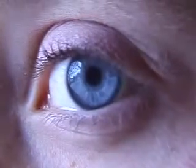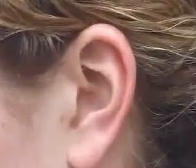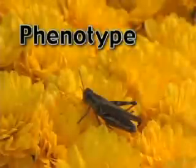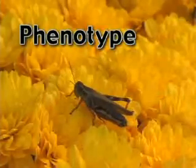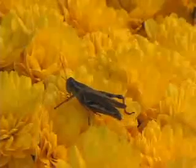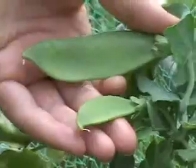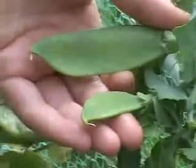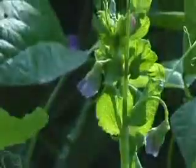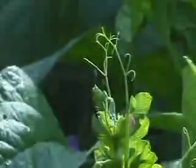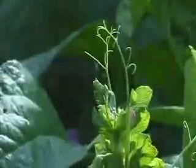The color of your eyes and the shape of your ears are all observable traits. A living thing's phenotype describes characteristics that can be observed. Peapod color, as well as pea plant height, are all observable traits that are part of a plant's phenotype. The phenotype of a living thing is the result of something else called its genotype.